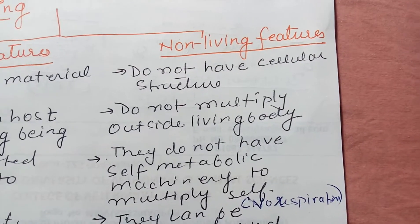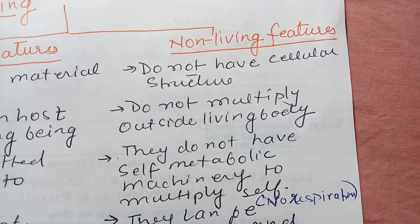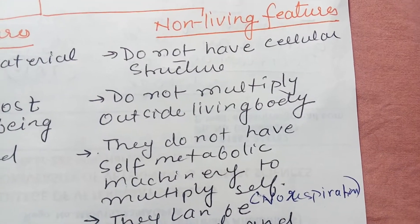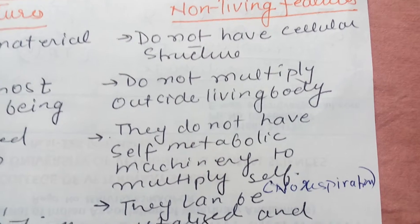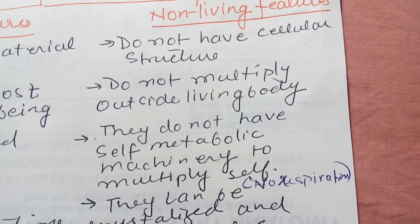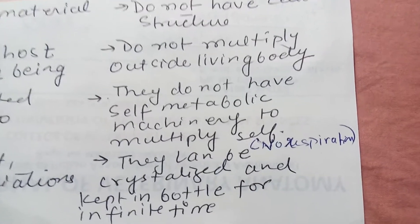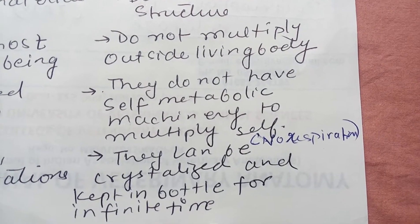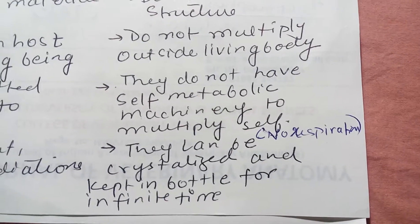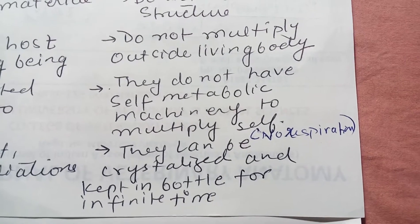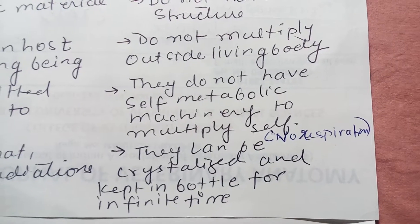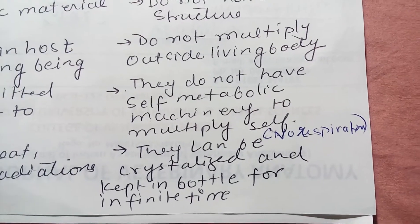Looking at non-living characteristics: they do not have a cell, so there is no cell present — as we say, all living beings are made up of cells. They do not multiply outside the living body, so you cannot multiply them in a lab or test tube; they are not multiplied on any non-living surface. They do not have self-metabolic machinery to multiply, such as respiration, which is an important process occurring in all cells. Viruses do not perform respiration, and other metabolic processes are also absent.